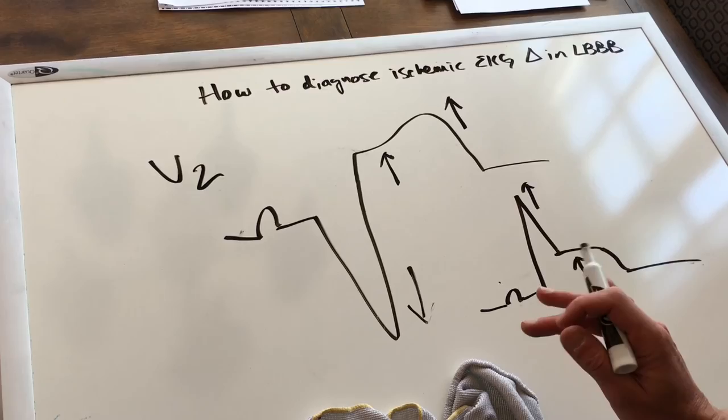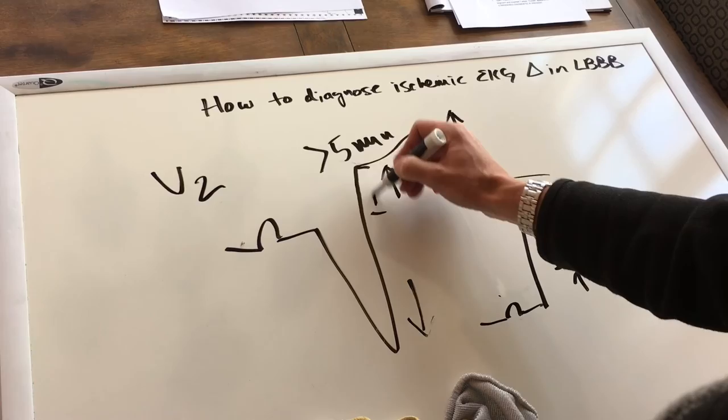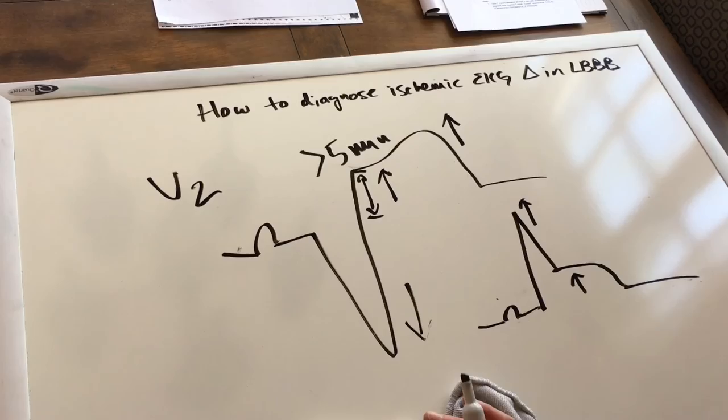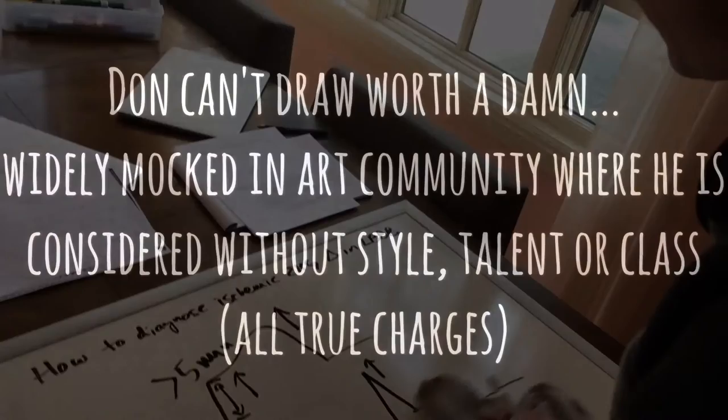The Sgarbosa criteria further expand on that to point out that if the deflection is discordant but greater than five millimeters, that's also ischemic — though I simply find that hard to remember. But if you fundamentally grasp this concept of inappropriate concordance, you won't go wrong.